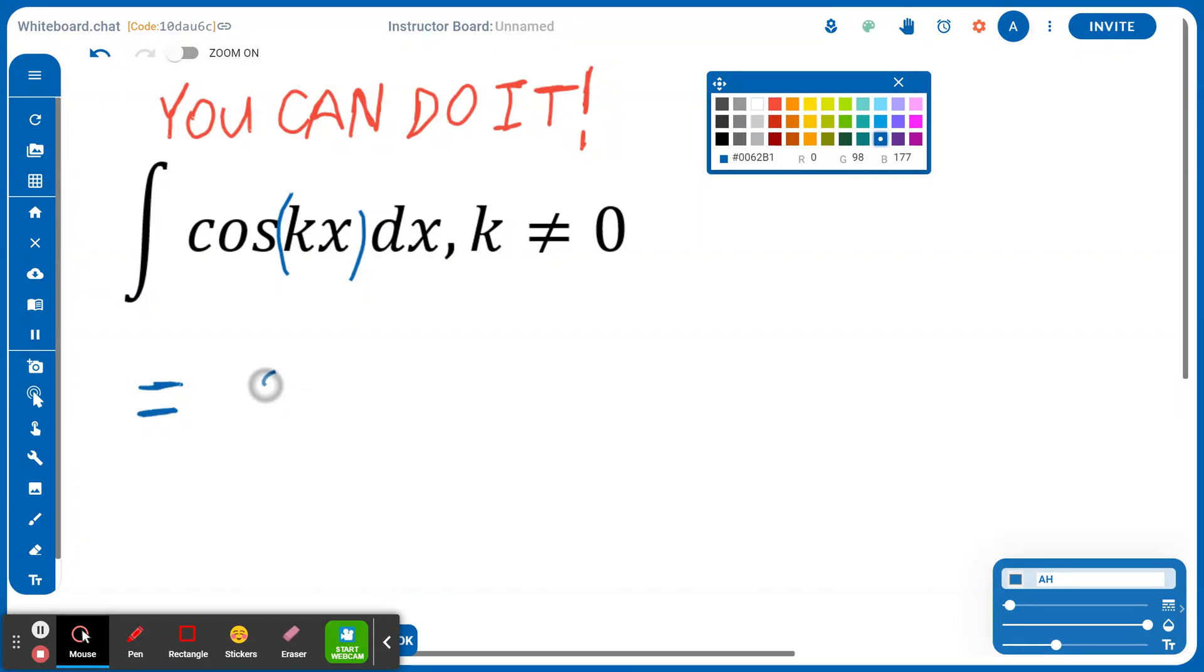Step one: if we think about the antiderivative of cosine, that's going to be sine. So in this case, the antiderivative of cos(kx) is going to be sin(kx) divided by the derivative of kx, which is k.